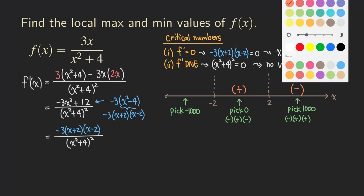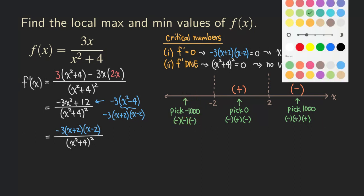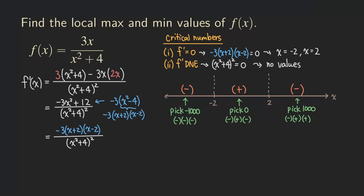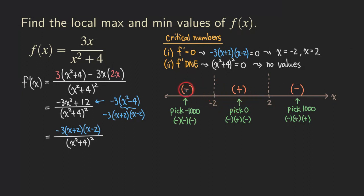For the interval to the left of negative two, we plug in negative 1000. The negative three is always negative. Negative 1000 plus two is negative, and negative 1000 minus two is also negative. We have three negative signs, so the result is also negative. The function is decreasing from negative infinity to negative two.